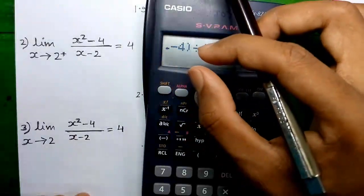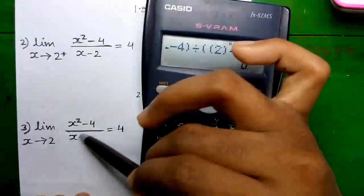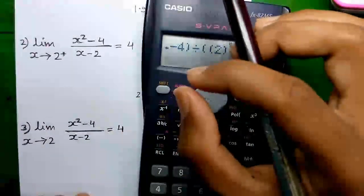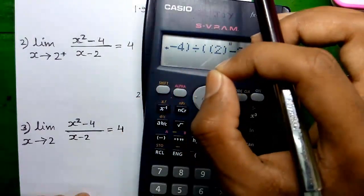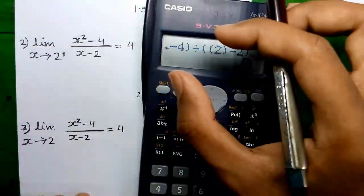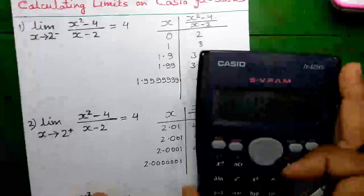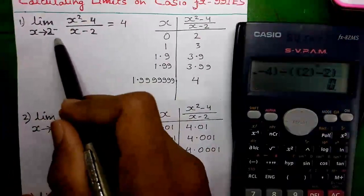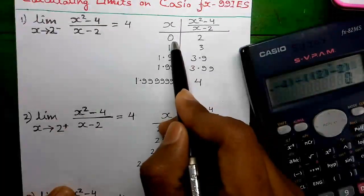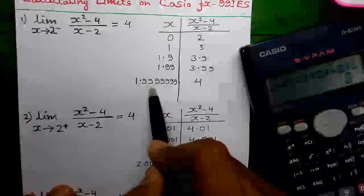By coming very close to 2, we can approximate the value of this limit at x equals to 2. We can't exactly find out the value at x equals to 2 because that is undefined, but we can approximate the value by coming very close to 2. First, we will calculate the left-hand side limit, starting from 0 and increasing the value to come very close to 2.